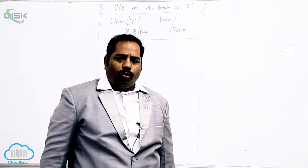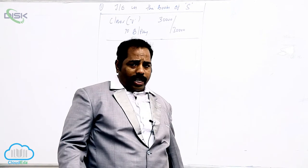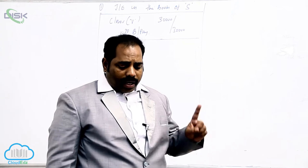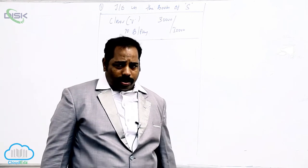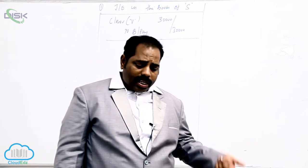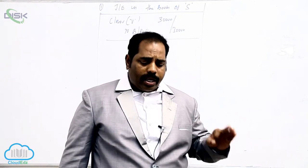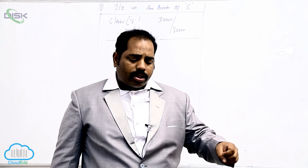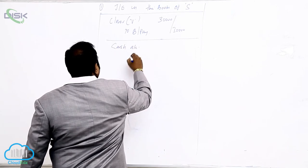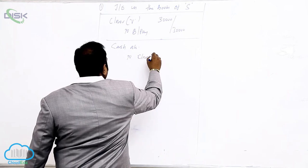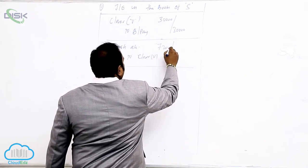The bill was discounted with the bank by the consignor V, so there is no entry in the books of consignee. Next, S submitted an account sales stating the entire stock was sold for ₹72,000. The consignee sells the goods to customers. He has not mentioned credit sales, so we assume entire sales were in cash. Entry: Cash Account Dr to Consignor (V) — ₹72,000.